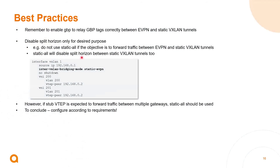Best practices: enable GBP so the Stub VTAP can relay the tag between both sides, especially when mixing static and eVPN tunnels. Disable split horizon only for the desired purpose — don't use the static-all option if the objective is only to forward traffic between eVPN and static VXLAN tunnels, because static-all disables split horizon between static VXLAN tunnels too. Use the static-eVPN option to forward traffic between eVPN dynamic tunnels and static VXLAN tunnels. If the Stub VTAP is expected to forward traffic between multiple gateways, then static-all should be used — configure according to deployment requirements.